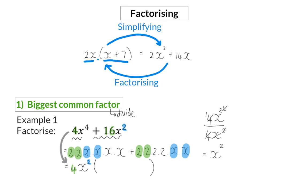I'm going to start off by taking the first term, 4x to the power of 4, and dividing it by my common factor. Once simplified, I will get a value of x squared, because 4 divided by 4 is 1, and using exponential laws, 4 minus 2 gives me x squared. Then I repeat this with the second term and also divide by the common factor of 4x squared. After simplifying, I will get a value of plus 4. And here we have factorized — we broke up the original expression into the product of two factors.